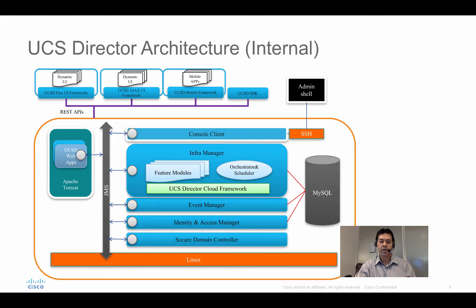There are many ways to get in. You can SSH in — you can do shell admin, or log in as root and run normal Linux commands. Normally you go to the web portal — there's a Tomcat service running. There's also a REST API that gives you an open API so you can come in from anywhere. If there's something UCSD doesn't provide out of the box, you can always make it happen through the API.